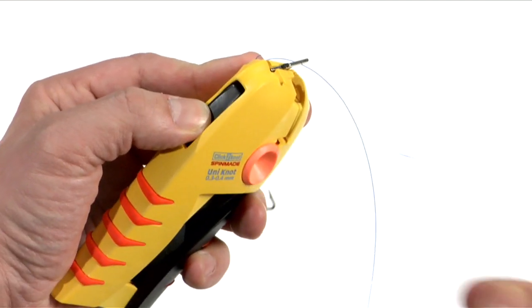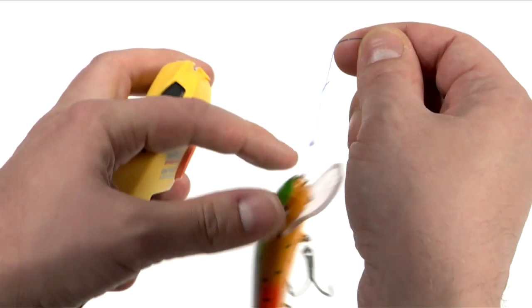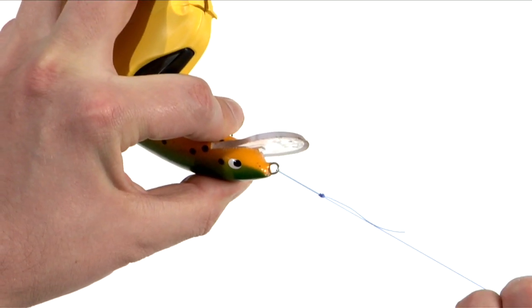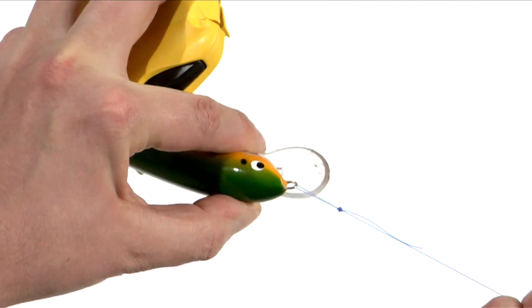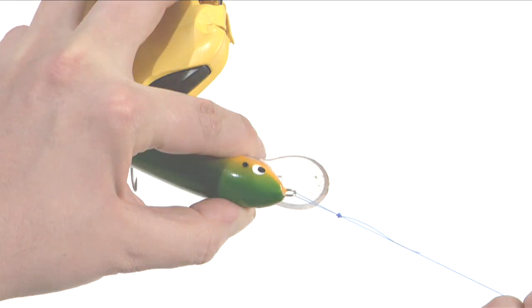Now test your knot by pulling on it forcibly. Ah, another great knot with the easy-to-use Click to Knot fishing tool, the best new accessory for 2008.